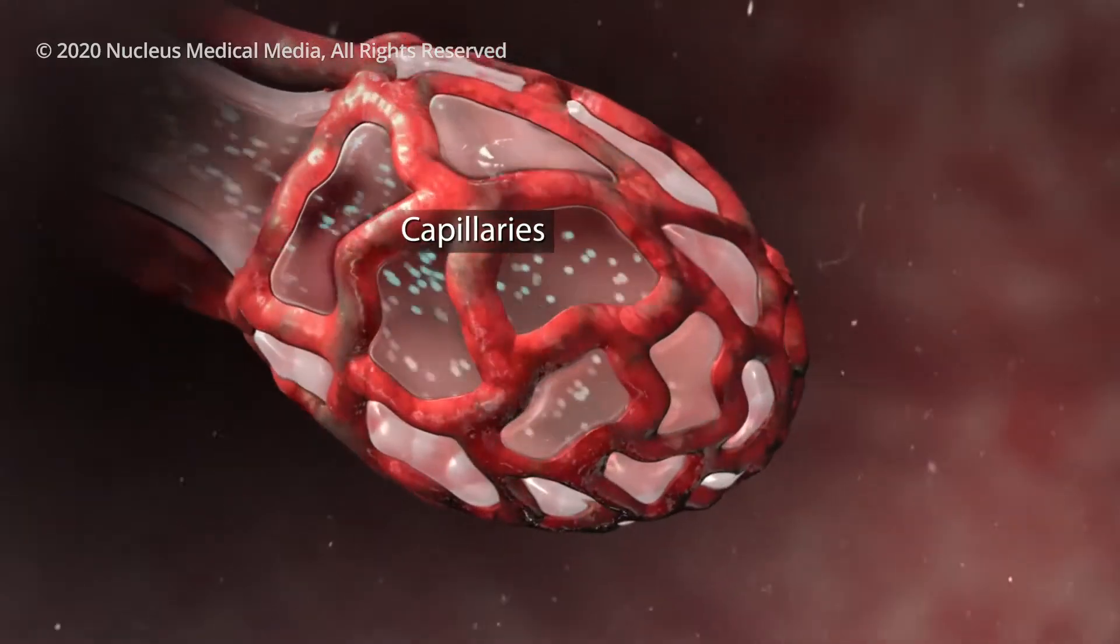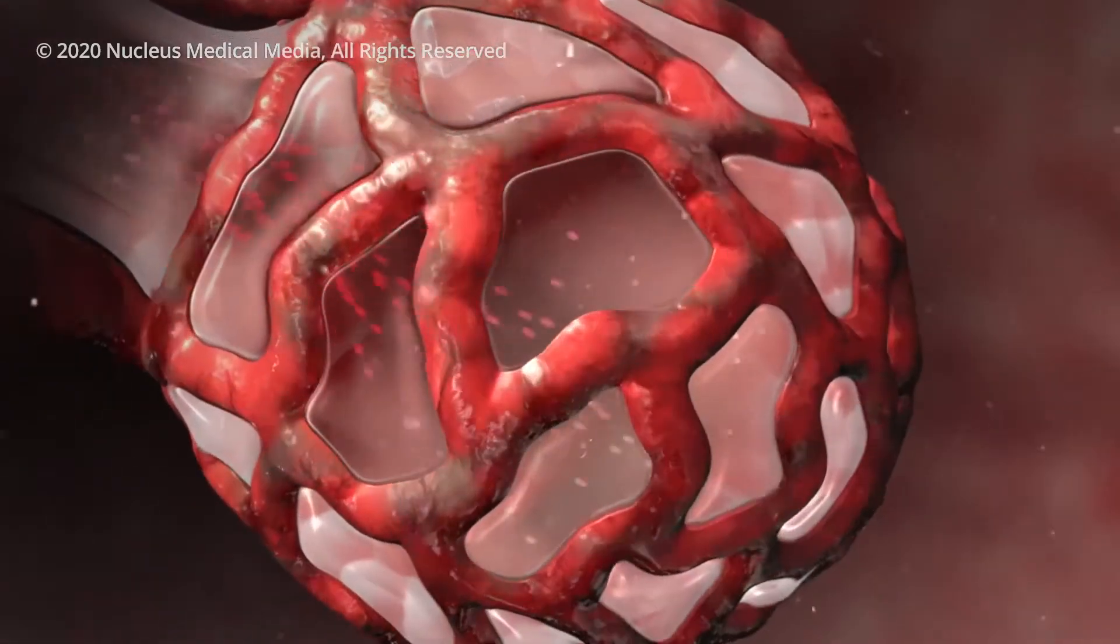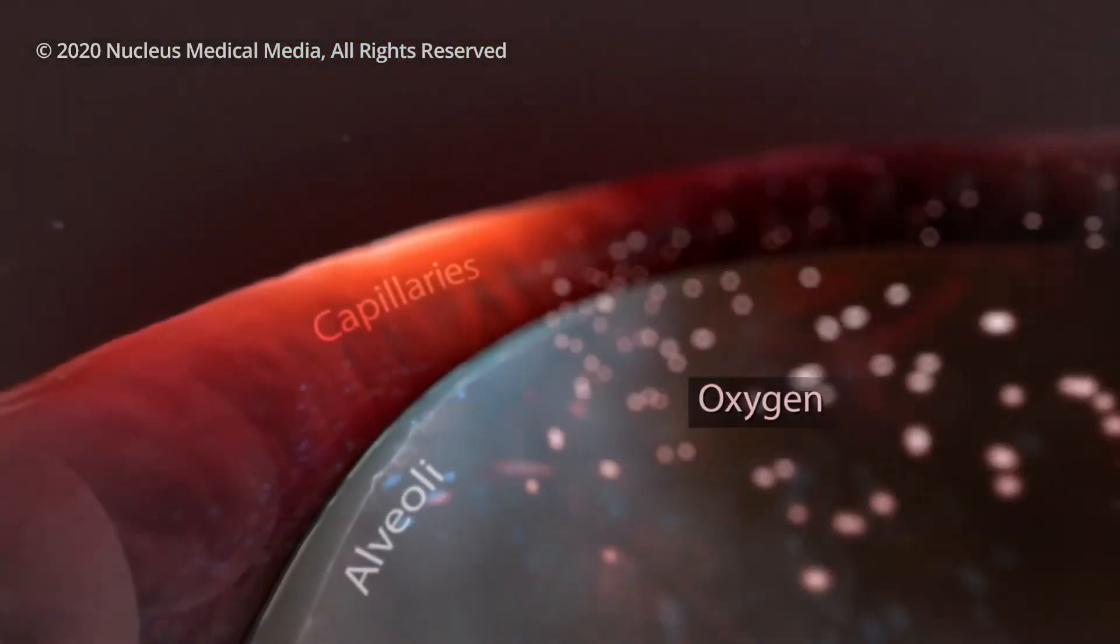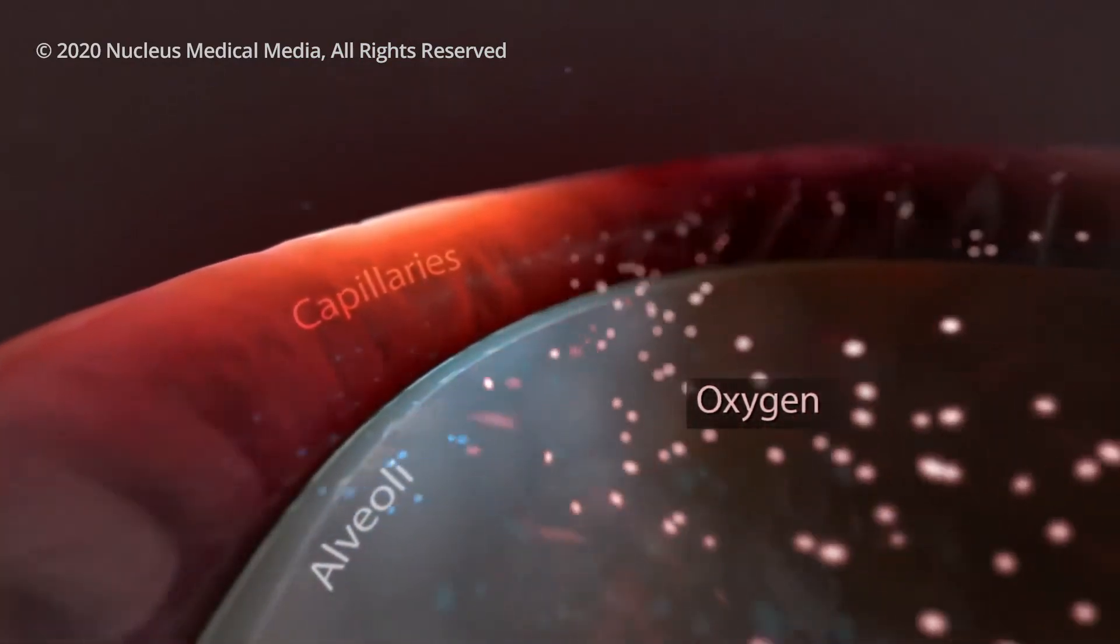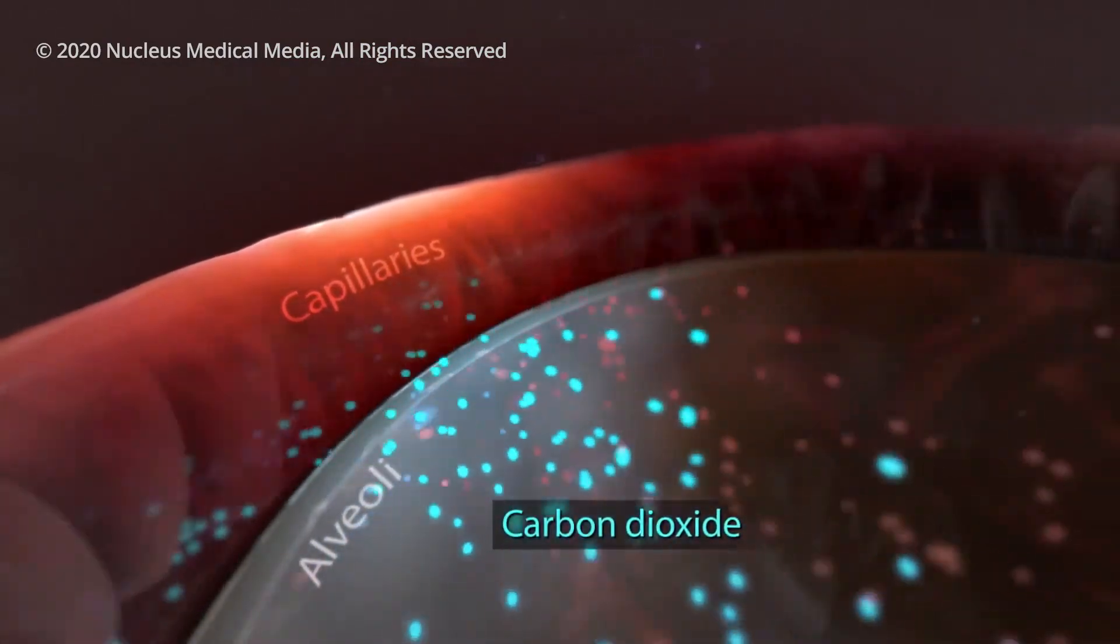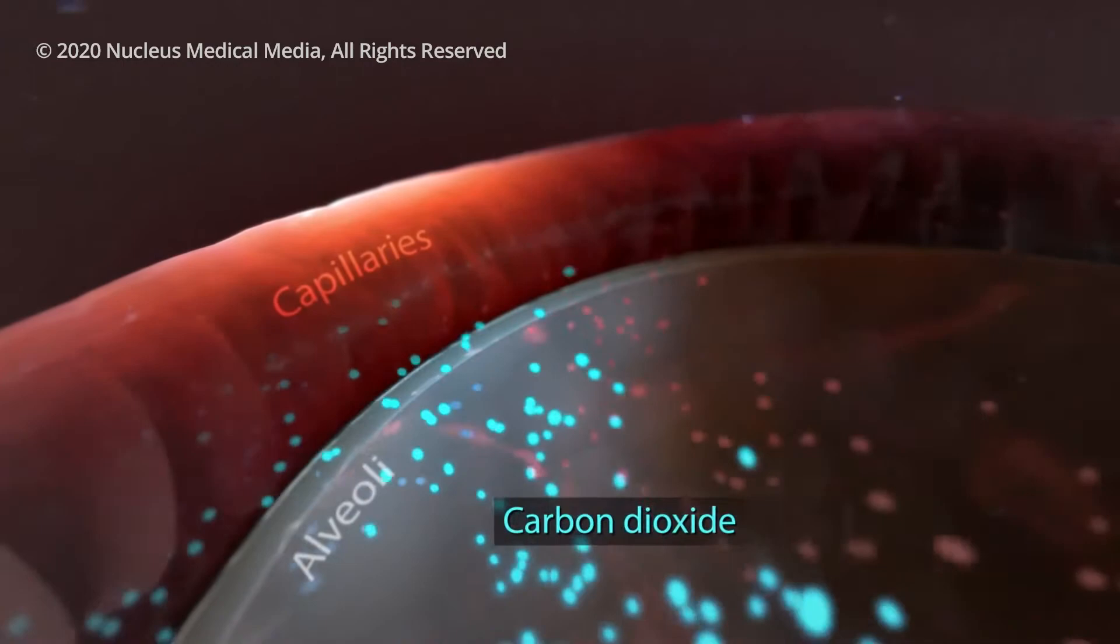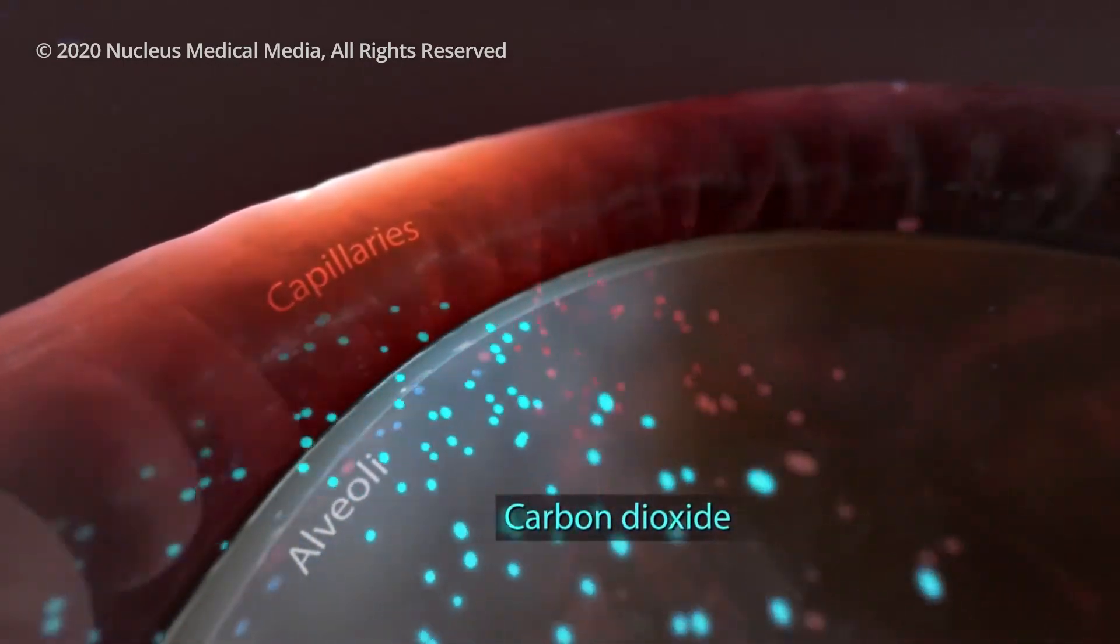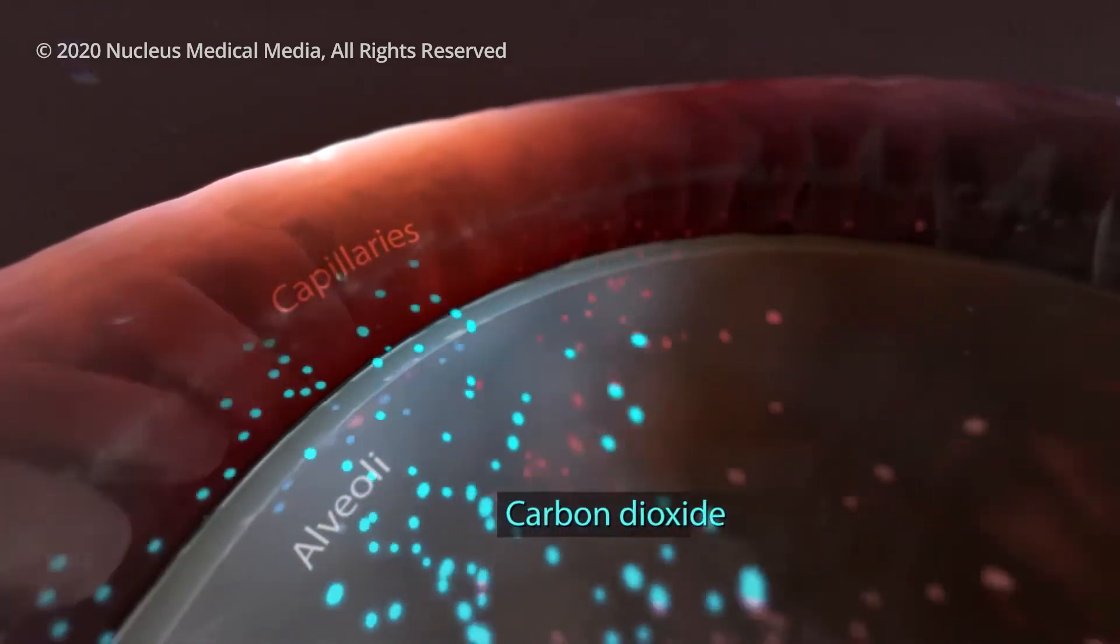Small blood vessels called capillaries surround your alveoli. Oxygen from the air you breathe passes into your capillaries, and then carbon dioxide from your body passes out of your capillaries into your alveoli so that your lungs can get rid of it when you exhale.